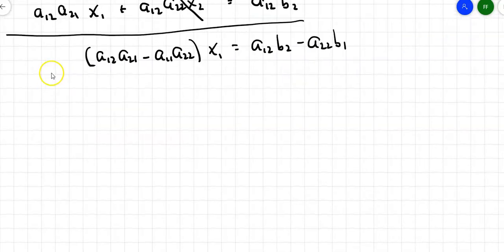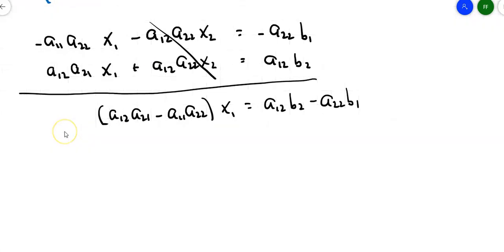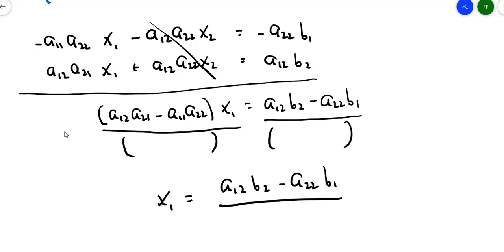On the other hand, it looks like I'm almost done solving this system. Because if I divide both sides by what's in that set of parentheses on the left side, don't I get x sub 1 equals a12b2 minus a22b1 over a12a21 minus a11a22.